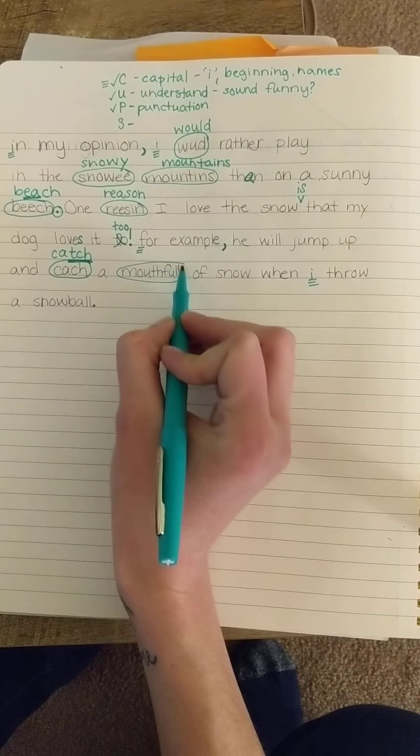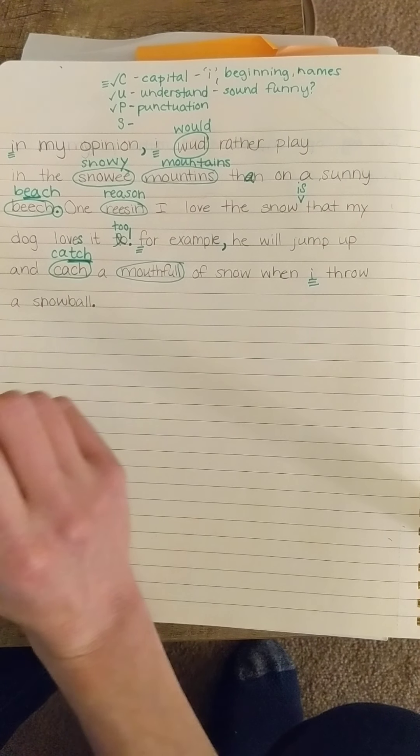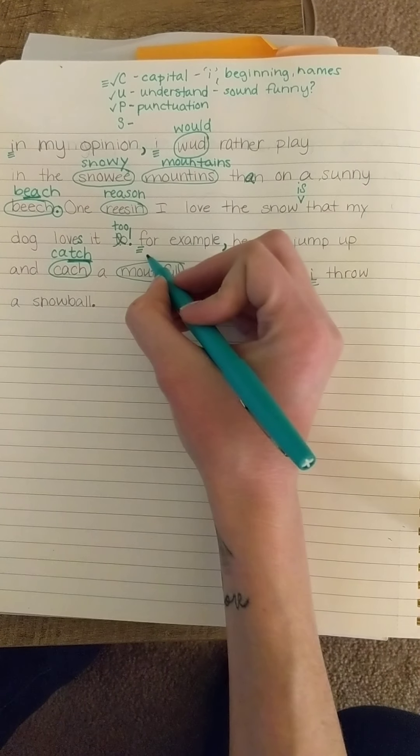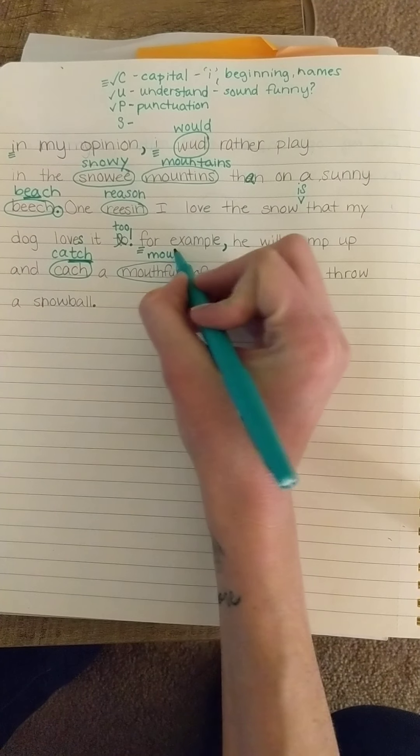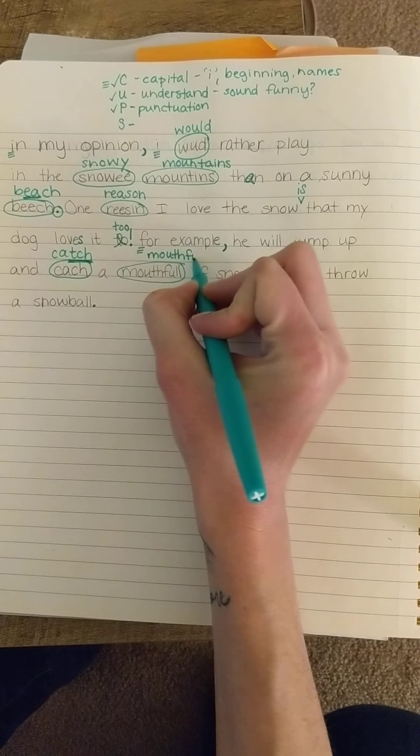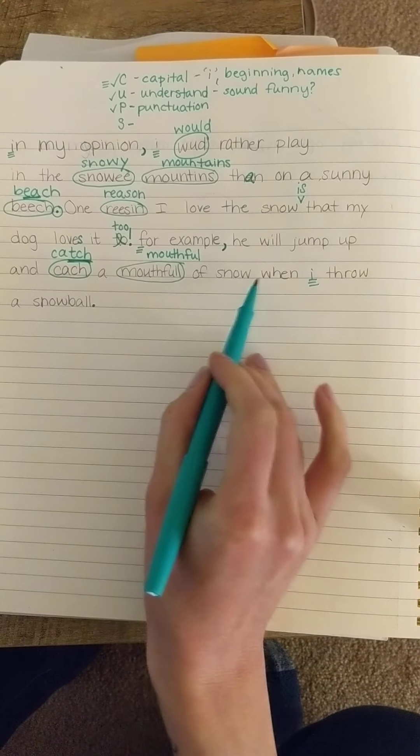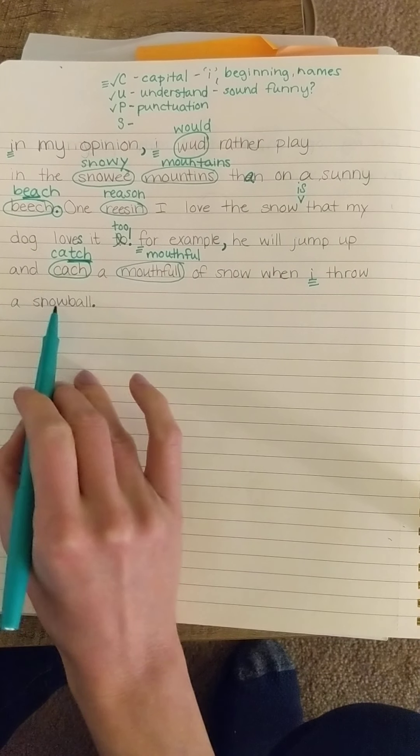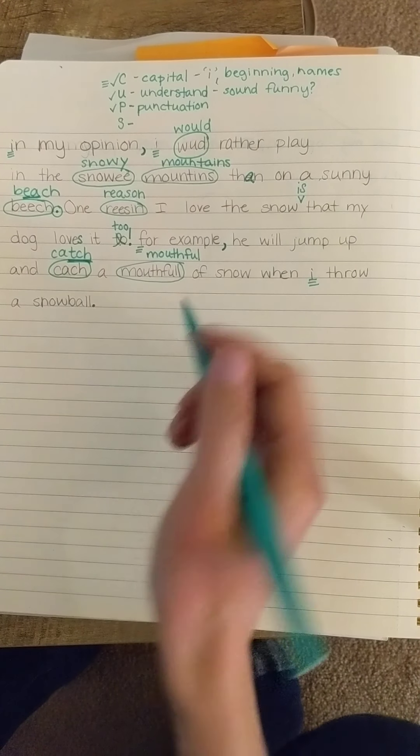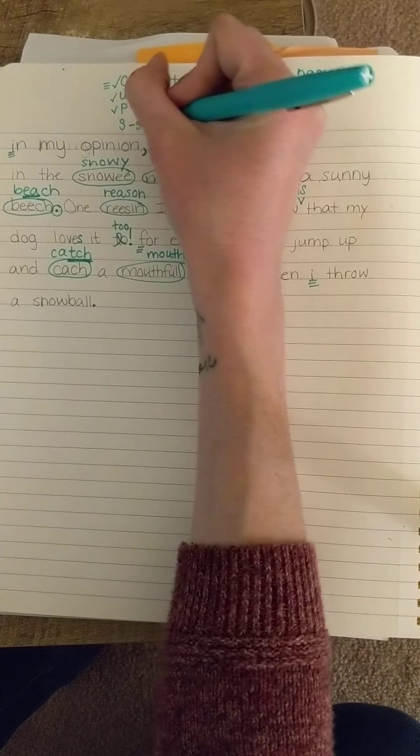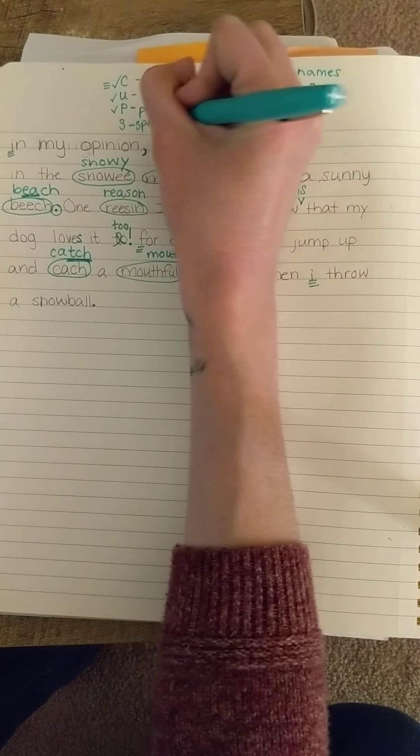A mouthful. When I add full on the end, like hopeful or beautiful, it actually only needs one L. So mouthful of snow when I throw a snowball. The rest of it looks awesome. I've checked for all of them.